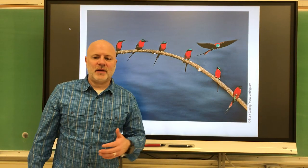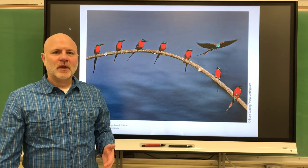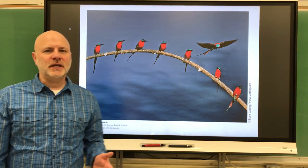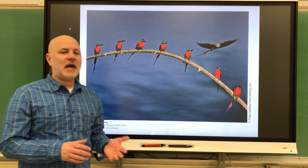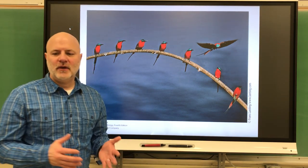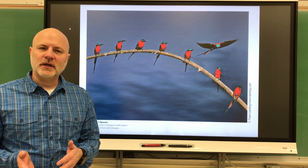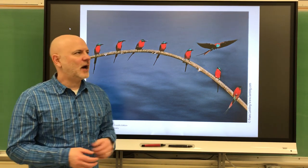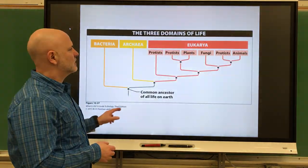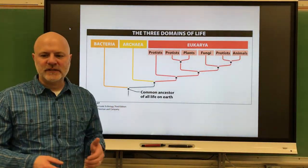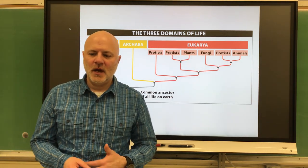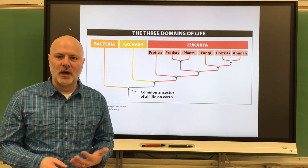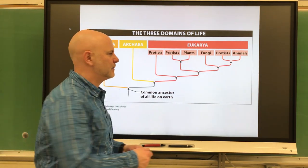Let's start chapter 13. The first thing we're going to look at in chapter 13 is the categories of life, essentially looking at them by energy source. The first group of organisms are known as heterotrophs, and these are organisms that obtain energy from other organisms.